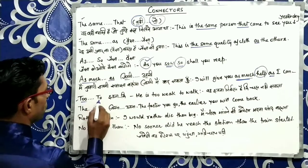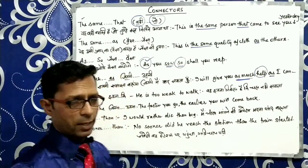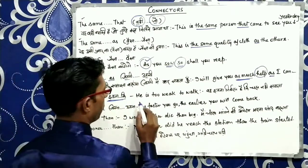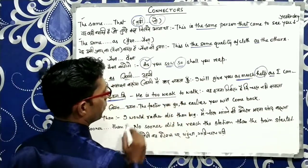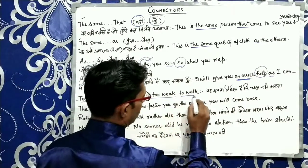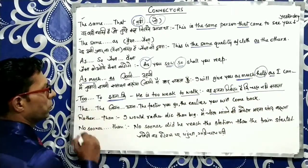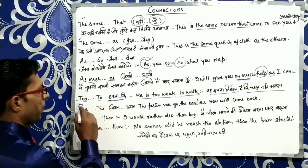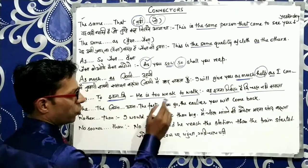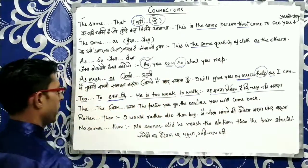اگلا connector ہے Too...To — اس کا مطلب ہے اتنا کہ. جیسے کہ He is too weak to walk — وہ اتنا کمزور ہے کہ چل نہیں سکتا. یہاں Too...To کا مطلب ہے اتنا اور کہ.